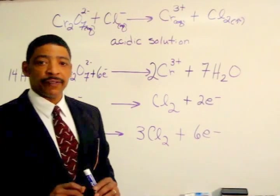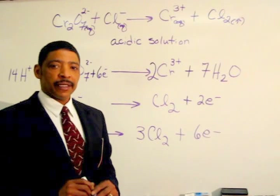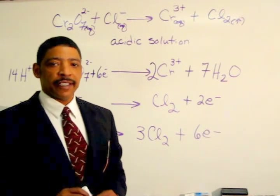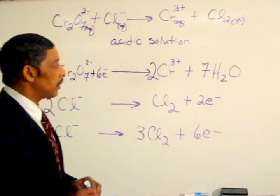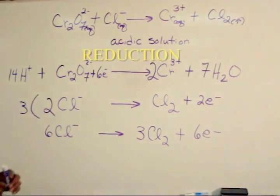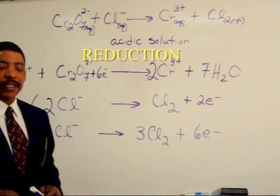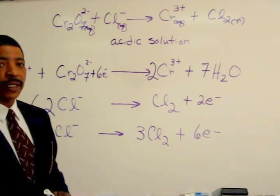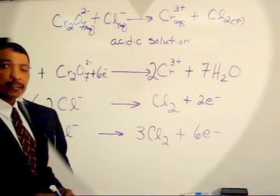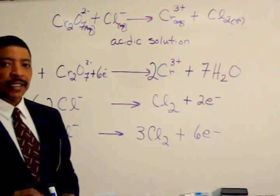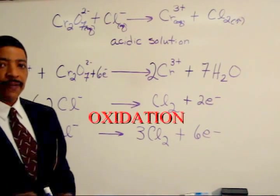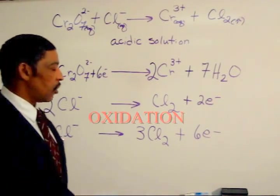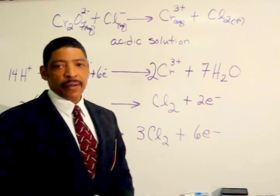At this point it is very easy to determine which half reaction is oxidation and which is reduction. The reduction half reaction is the first half reaction — in a reduction half reaction, the electrons are always written on the left side. The second half reaction is an oxidation half reaction — in an oxidation half reaction, the electrons are always written on the right side.